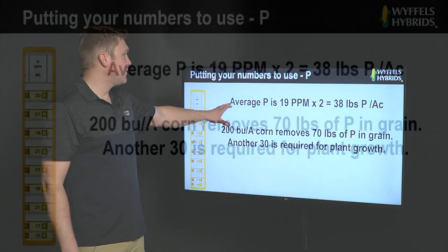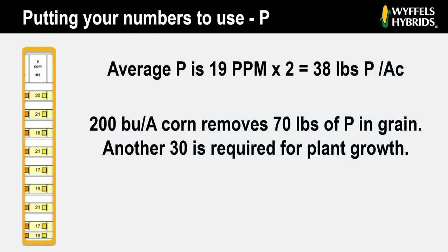For example, using our same average: 19 parts per million times two gives us 38 pounds of phosphorus per acre. A 200 bushel per acre corn crop removes 70 pounds of phosphorus in the grain alone — meaning when you haul that grain off, you're hauling off 70 pounds of phosphorus per acre. However, just for normal plant growth and metabolic function, you need another 30 pounds required to get to a 200 bushel per acre corn crop. So in this particular instance, we're going to need some additional phosphorus on that acre to achieve our yield goal.